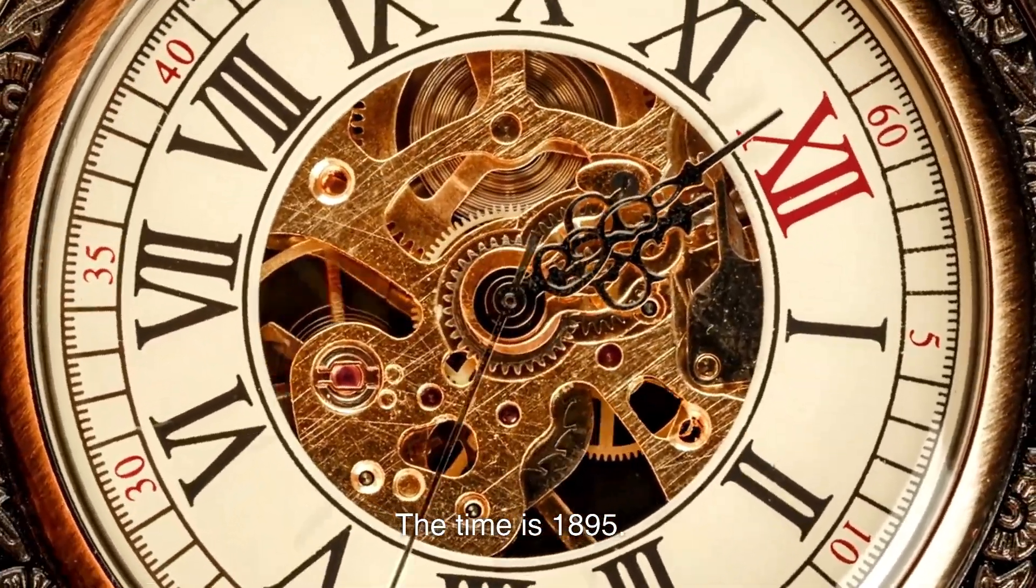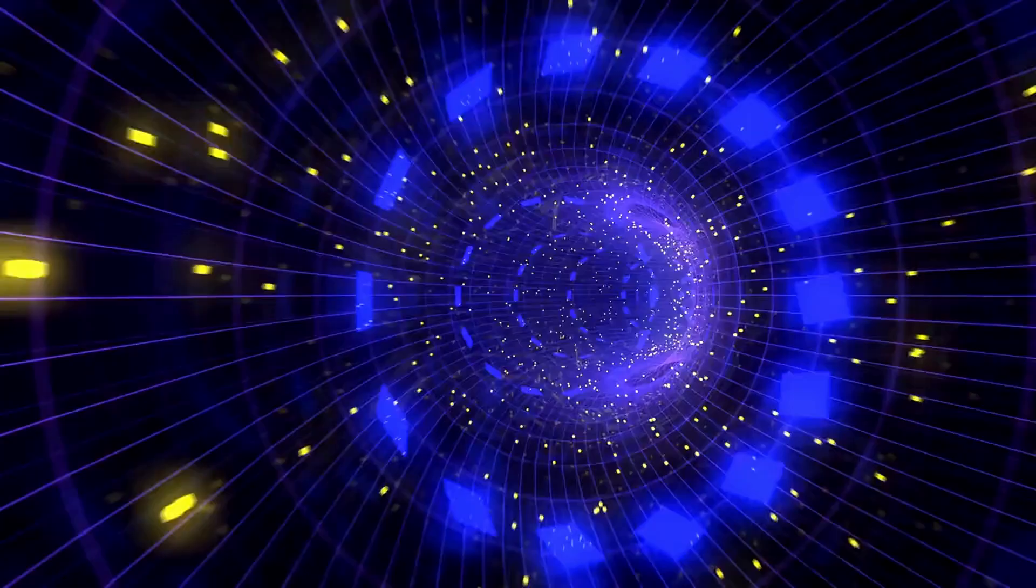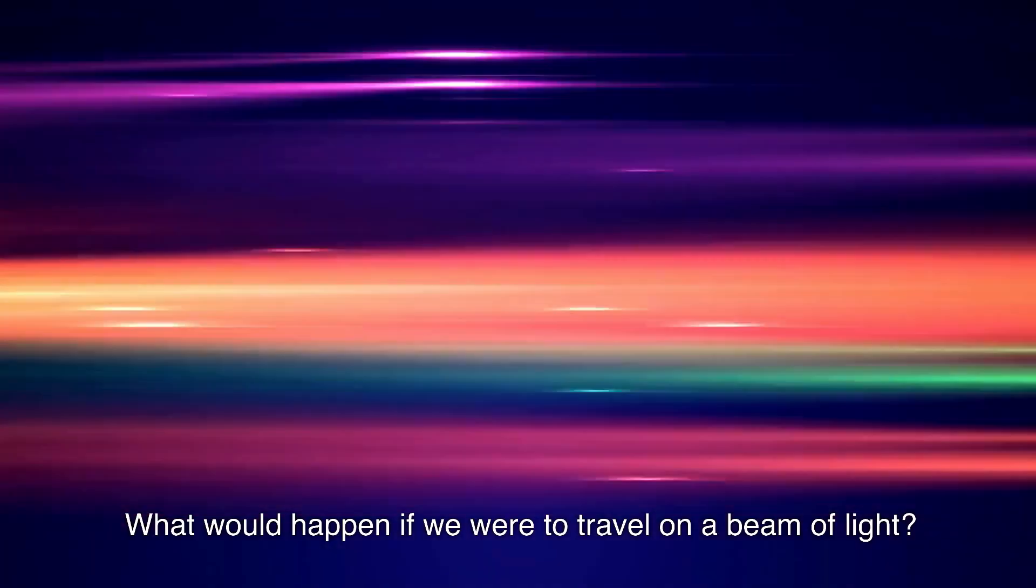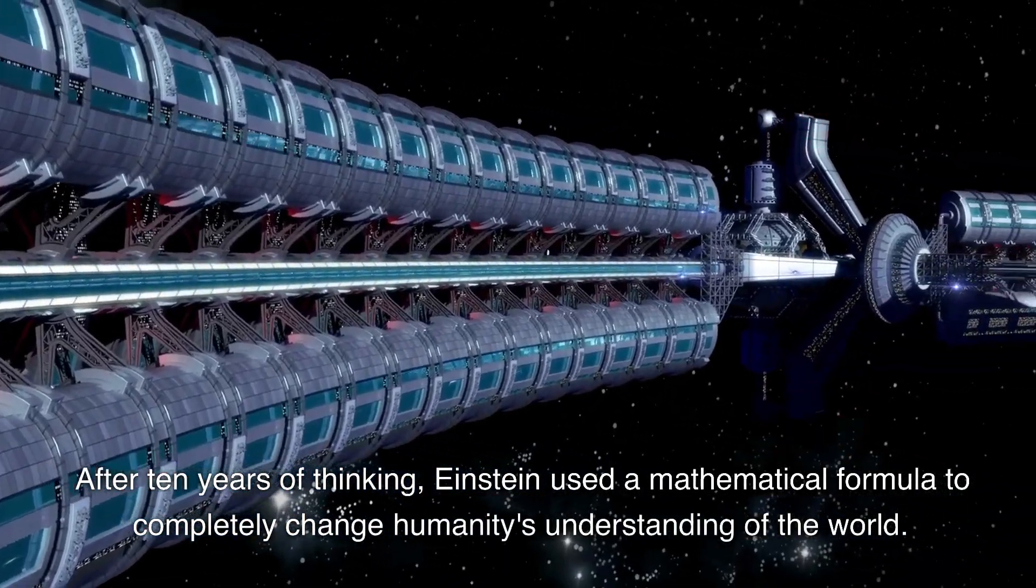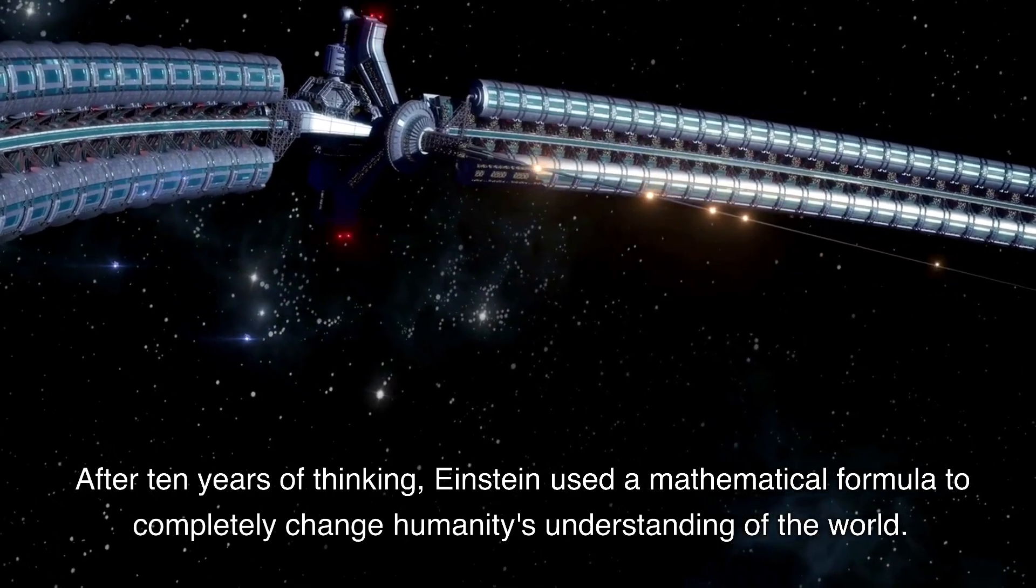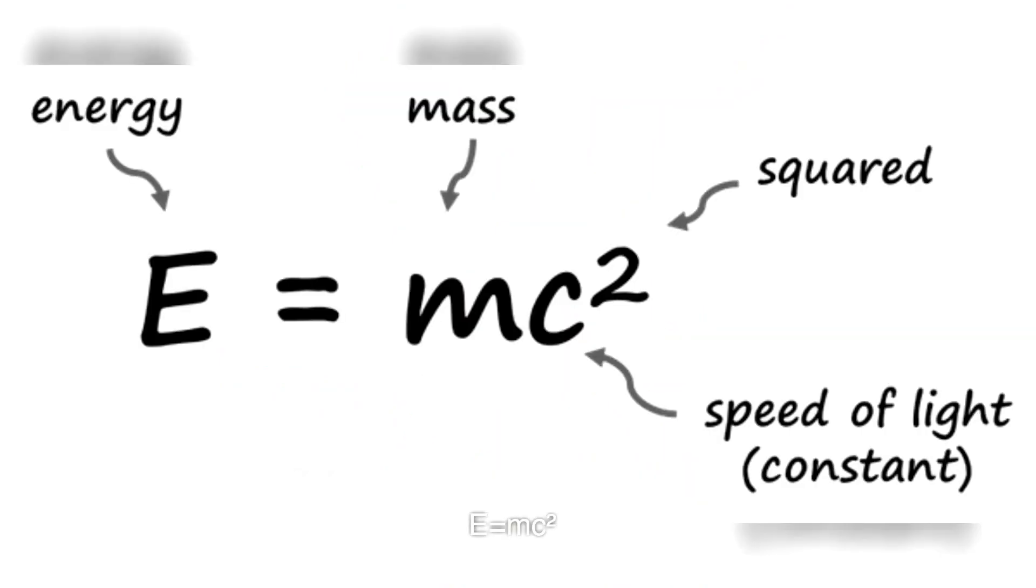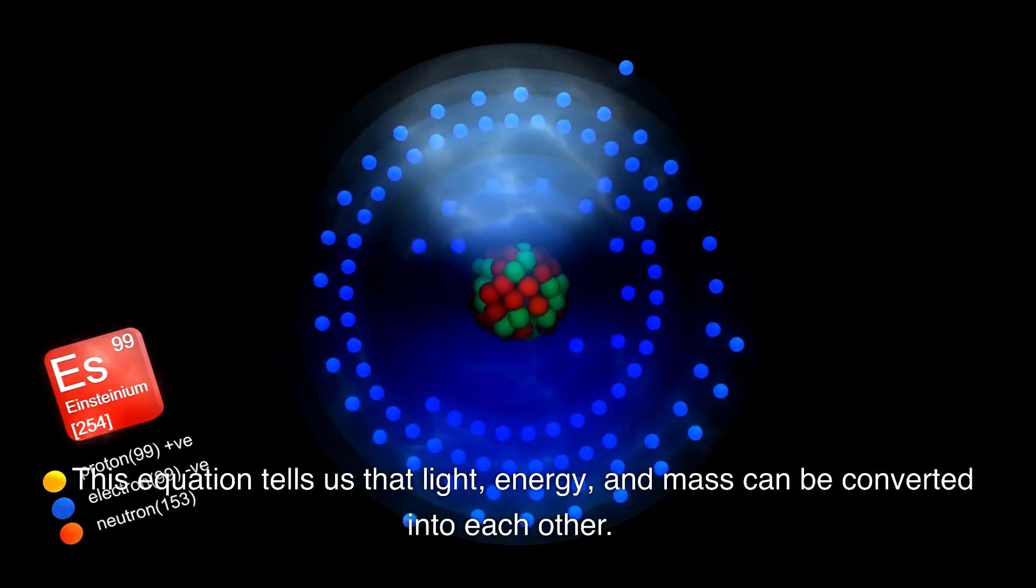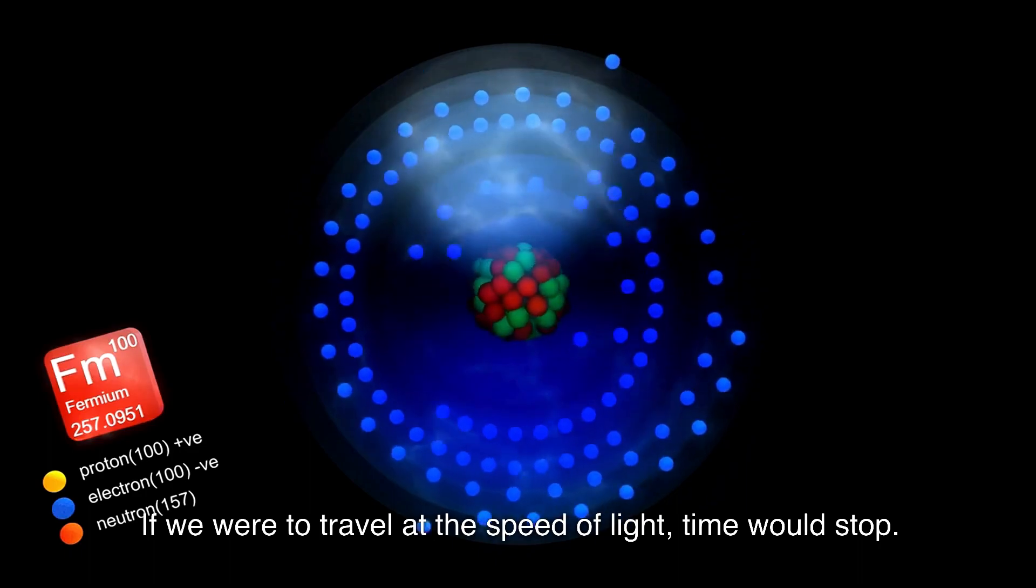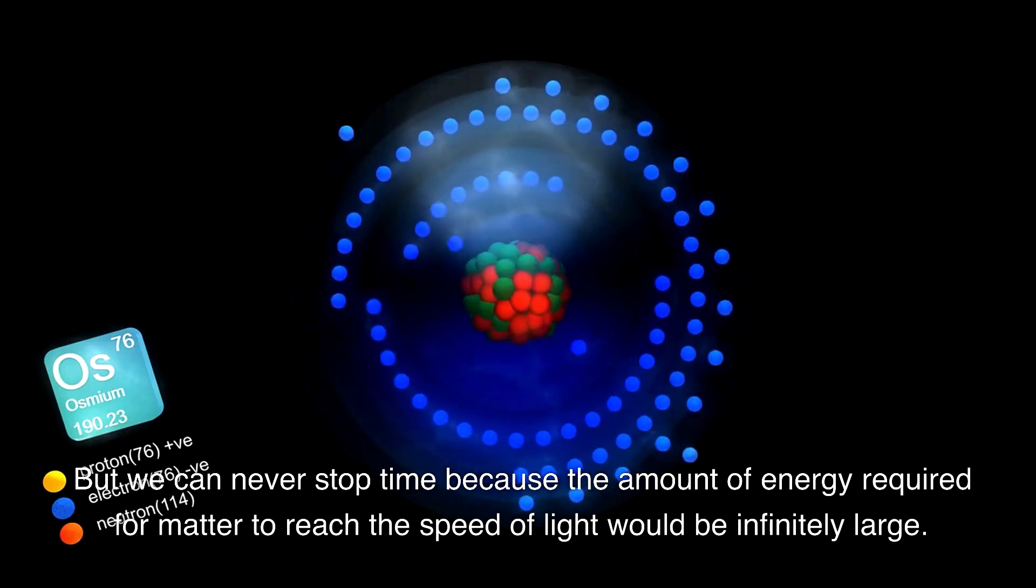The time is 1895. Sixteen-year-old Albert Einstein was captivated by a question: Why is light the upper limit of speed for all objects in the universe? What would happen if we were to travel on a beam of light? After ten years of thinking, Einstein used a mathematical formula to completely change humanity's understanding of the world. This is the simplest expression of Einstein's mass-energy equivalence equation, E=mc². This equation tells us that light, energy, and mass can be converted into each other. If we were to travel at the speed of light, time would stop.